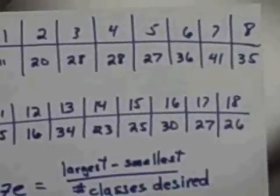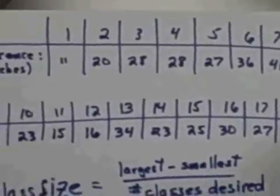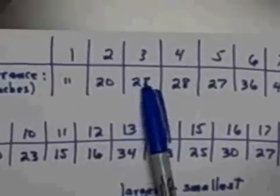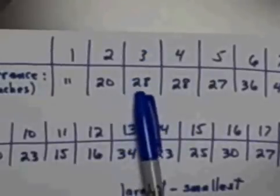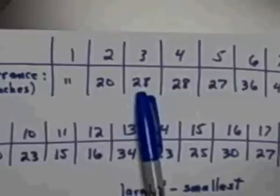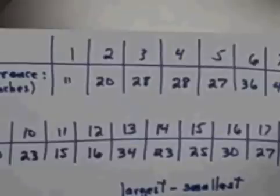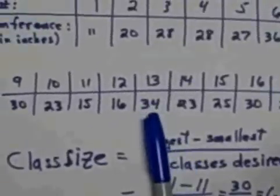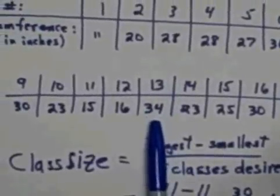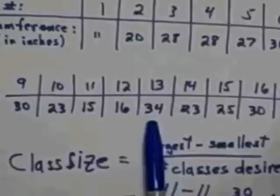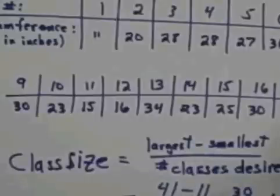Now, something you really, really need to understand before we get started here is that when I say that, for example, tree number three, which you watched me measure, has a circumference of 28 inches, what that really means is I rounded that to the nearest inch. So the actual circumference of that tree was something between 27 and a half and up to 28 and a half. I don't remember what it was. I just rounded it to 28. Same thing with tree number 13. I got 34 inches, but it actually was something between 33 and a half inches and 34 and a half inches. So we're always rounding here.